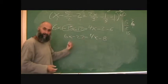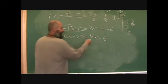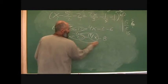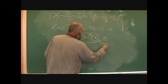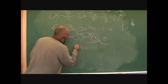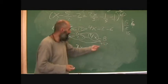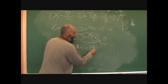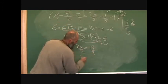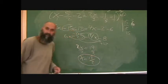Bring all your x's to one side and your numbers to the other. So it's going to be minus four x, bring it over, plus twenty-seven. Six x minus four x is two x. Over here, twenty-seven minus eight is nineteen. Divide by two, so x is equal to nineteen over two. And that's your final answer.